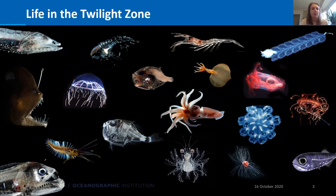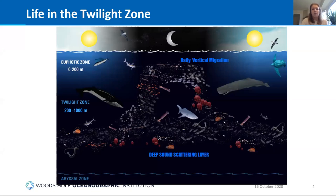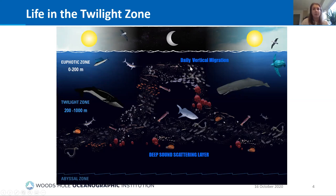From what we already know about the mesopelagic, many of these organisms tend to form what we call deep scattering layers — layers of the ocean with relatively dense organism density compared to surrounding areas. Another key characteristic is the daily vertical migration: every evening many of these organisms migrate up to the surface, and back down in the morning, so they can feed in epipelagic waters under the cover of darkness when visual predators like marine mammals are less likely to hunt them.